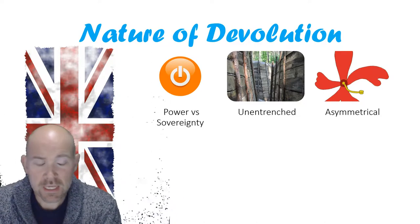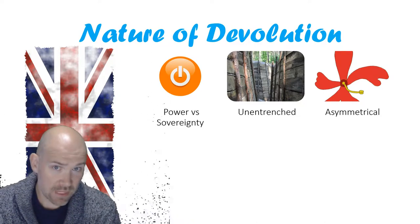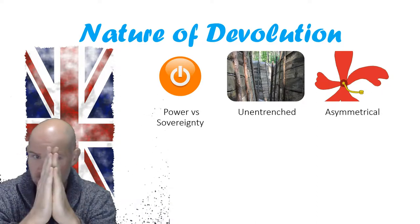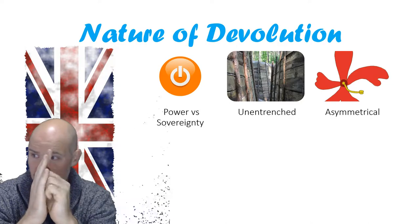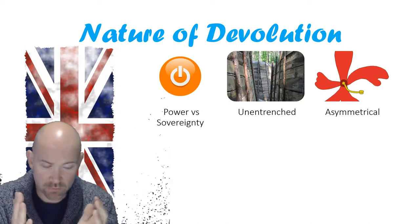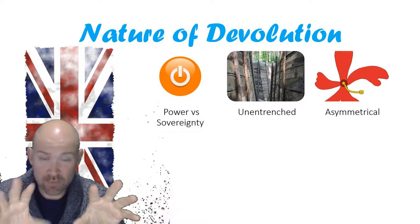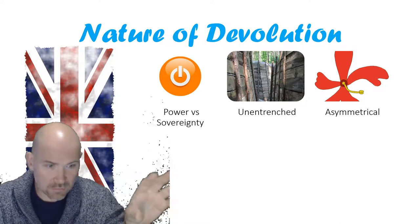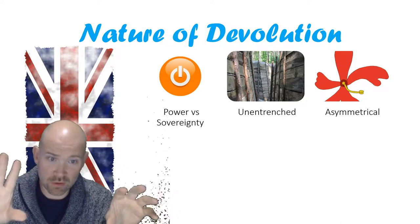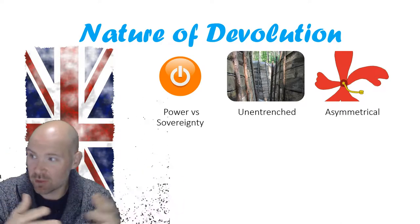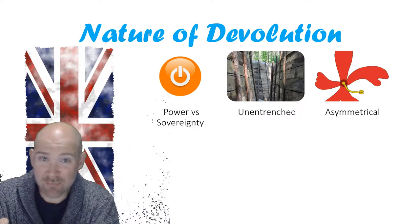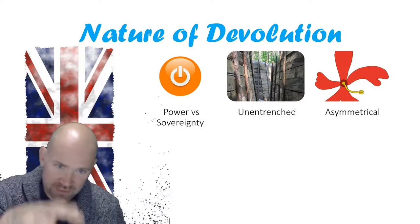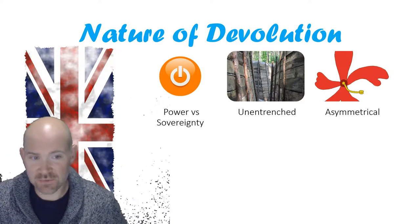Another difference between a federal system and a devolved system is that devolution is asymmetrical. Symmetrical means two things are exactly the same; asymmetrical means they are different on both sides. For example, Texas and Florida in a symmetrical federal system have exactly the same powers. But Wales, Scotland, and Northern Ireland — their assemblies and parliaments don't. In fact, one of them is a parliament and two of them are assemblies, which shows from the outset that this is an asymmetrical system where different assemblies are given different powers.